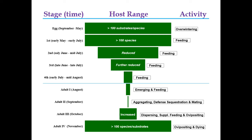Because of where the eggs are laid, they actually have more hosts or substrates than the feeding stages. By the second or third instar, they will gradually narrow their host range down to fewer species — definitely not as many as the first instar. By the fourth instar, you can only see them on very, very few species.